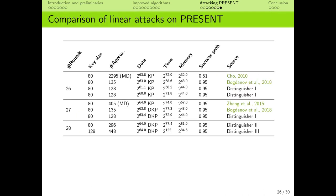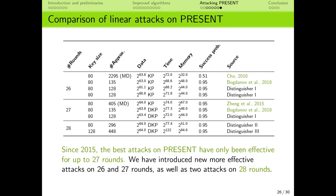This table compares our new attacks with the best previous attacks on PRESENT. In short, we have provided new attacks on 26 and 27 rounds with smaller data and time complexity, as well as the very first attacks on the 28-round version of the cipher.